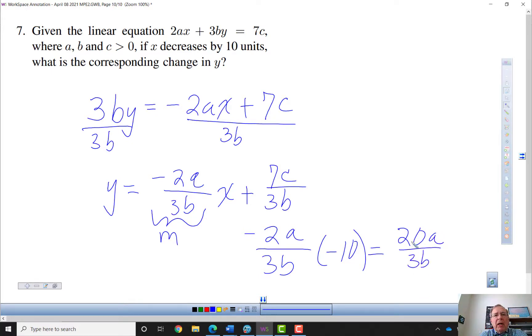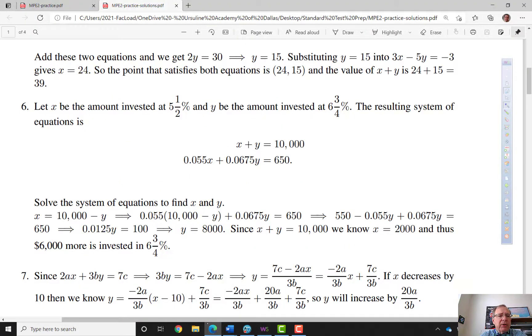So if I have X go down 10 units, Y will go up by 20A over 3B. And we'll go check their answer.